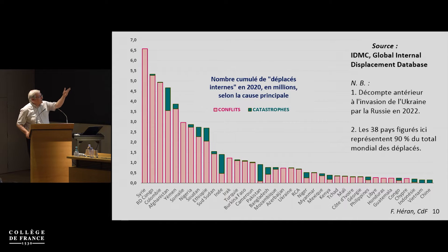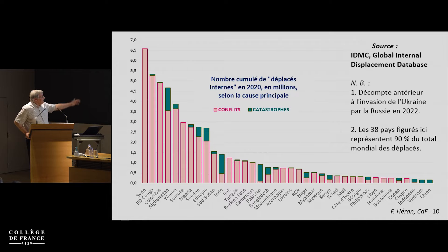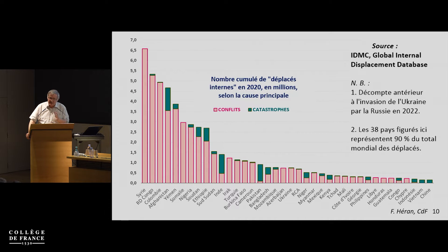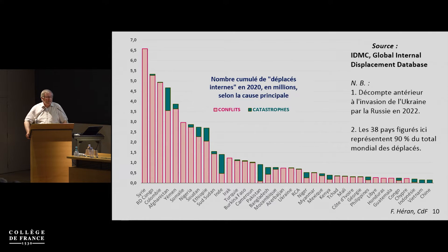This is a classification of the top 38 countries, which include 90% of the world total of displaced persons — so it's rather comprehensive. You see Syria, Congo, Colombia, Afghanistan, Yemen, Somalia — all these countries in conflict. Venezuela, with more than 4 million people who fled, is not included because it's not considered as forced displacement. And of course Ukraine is not here because this is a stock taken before the Russian invasion.